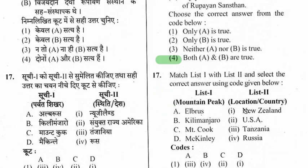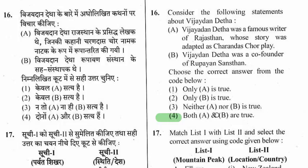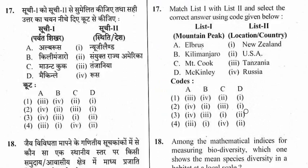Question 17: Match list 1 and list 2 — mountain peaks and their countries. The right option is option 3. Elbrus is in Russia, Kilimanjaro is in Tanzania, Mount Cook is in New Zealand, and McKinley is in the USA.